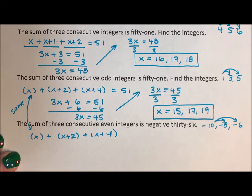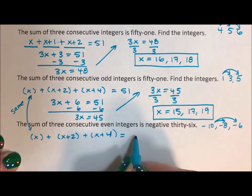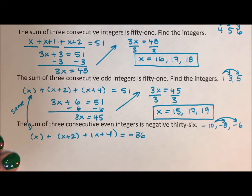Notice that the setups are the same. Because it doesn't matter if it's consecutive even or consecutive odd, you're still jumping every other number. And so the basic setup is going to be the same. What's going to be different is this, negative 36. That's what's going to be different.